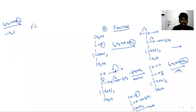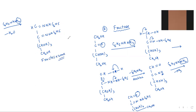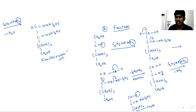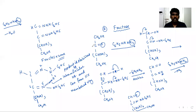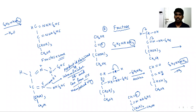Similarly, fructose reacts with 3 moles of phenylhydrazine to give fructosazone. Fructosazone and glucosazone are the same yellow crystalline derivative — glucose and fructose give the same type of osazone. The reaction does not proceed beyond C2 due to stabilization by intramolecular hydrogen bonding forming a six-membered ring.